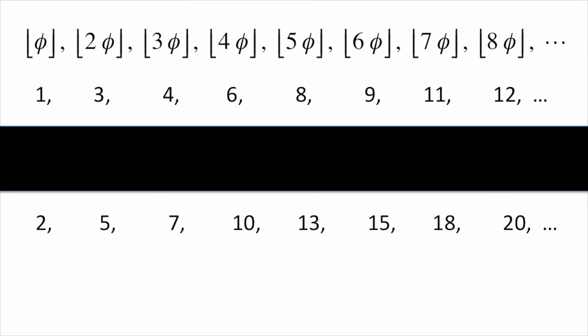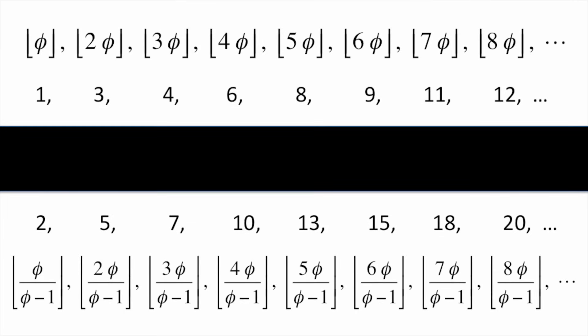But what about the numbers we skipped? 2, 5, 7, etc. It turns out that these are obtained a similar way with the floor function and multiples of the number Phi over Phi minus 1. This is a special instance of Beatty's theorem.